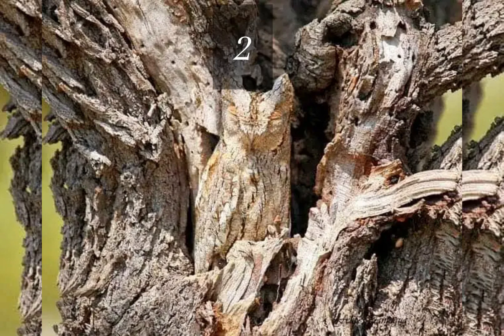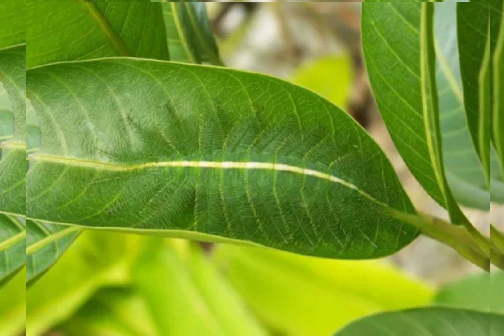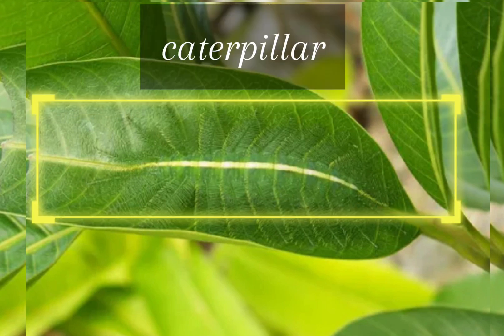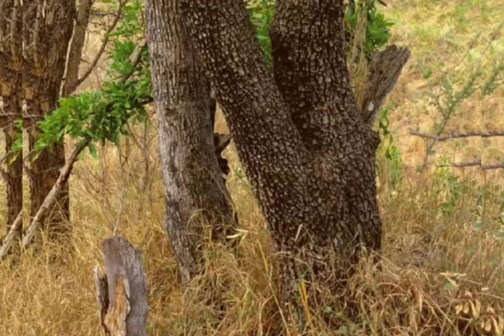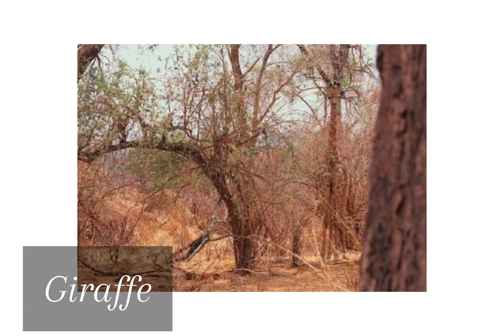Guess the animal hidden in the tree trunk — three, two, one — Indian owl! Find the bug in the leaf — three, two, one — caterpillar! Guess the hidden animal — three, two, one — leopard! What is in the forest? — three, two, one — giraffe!